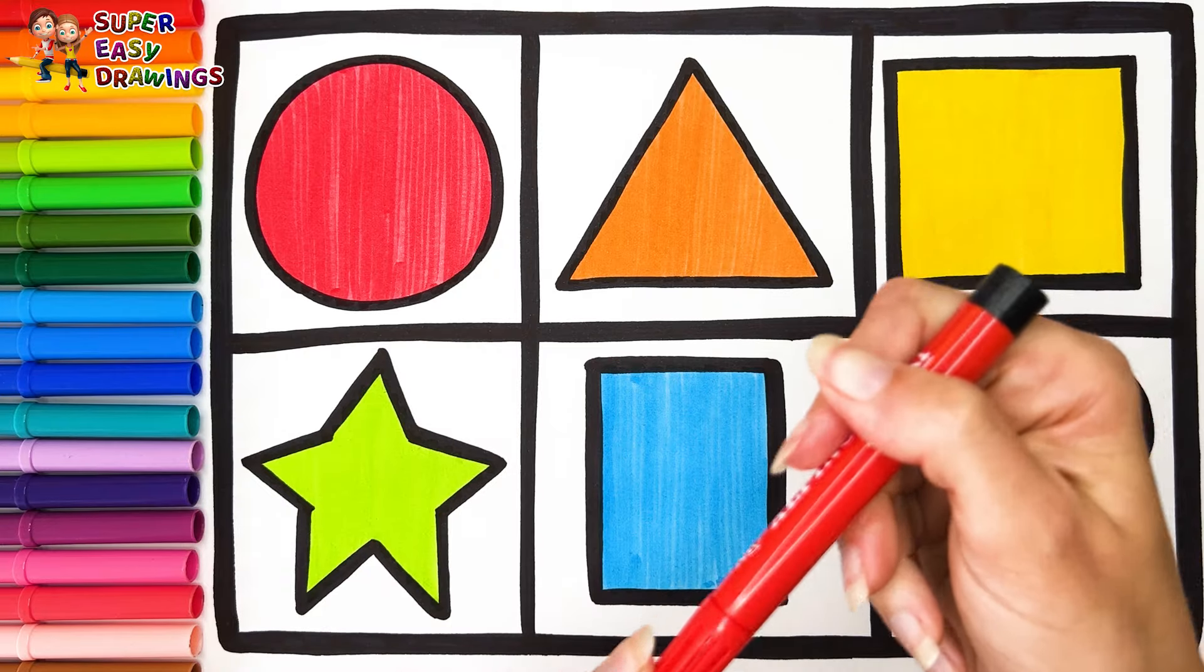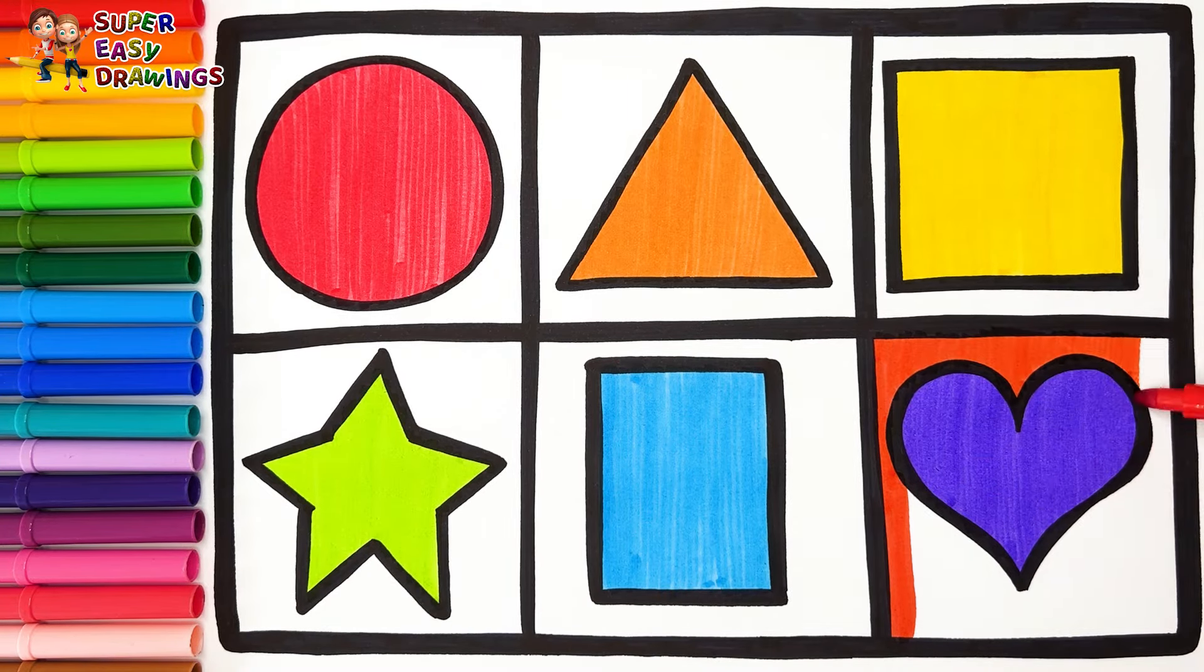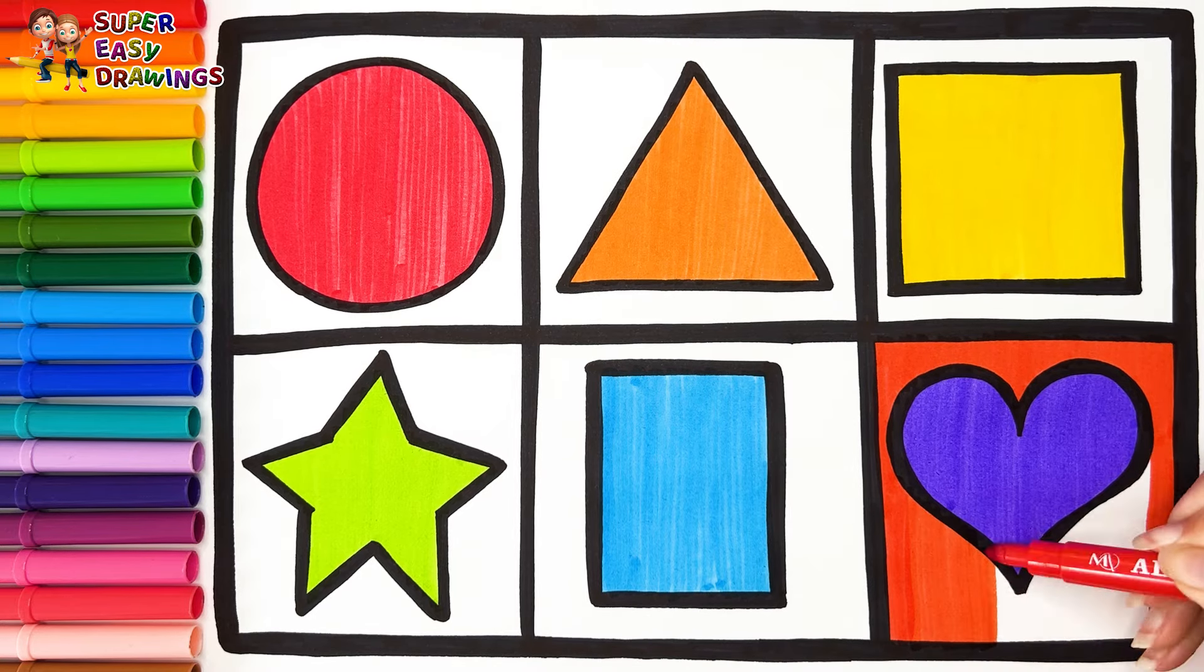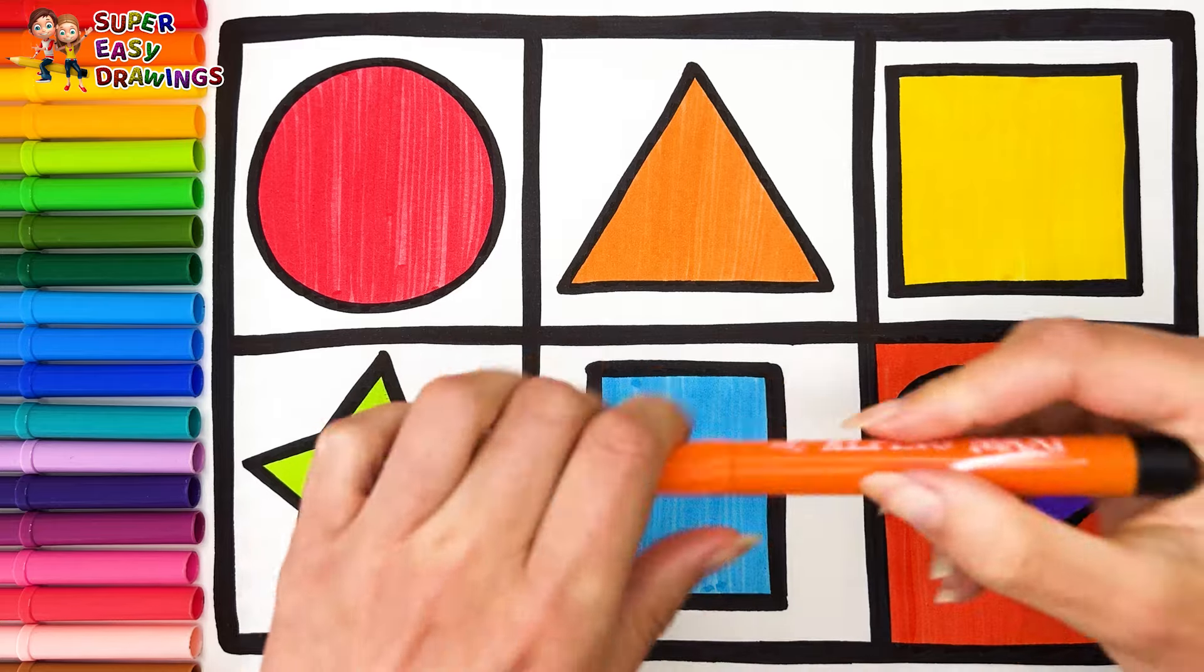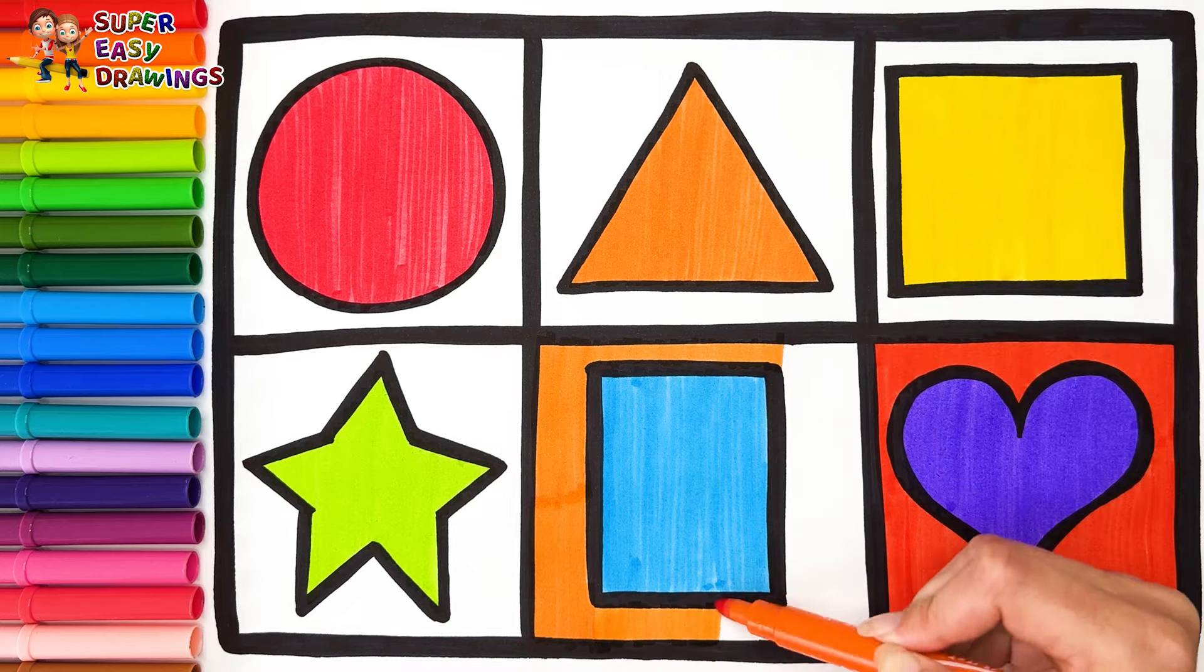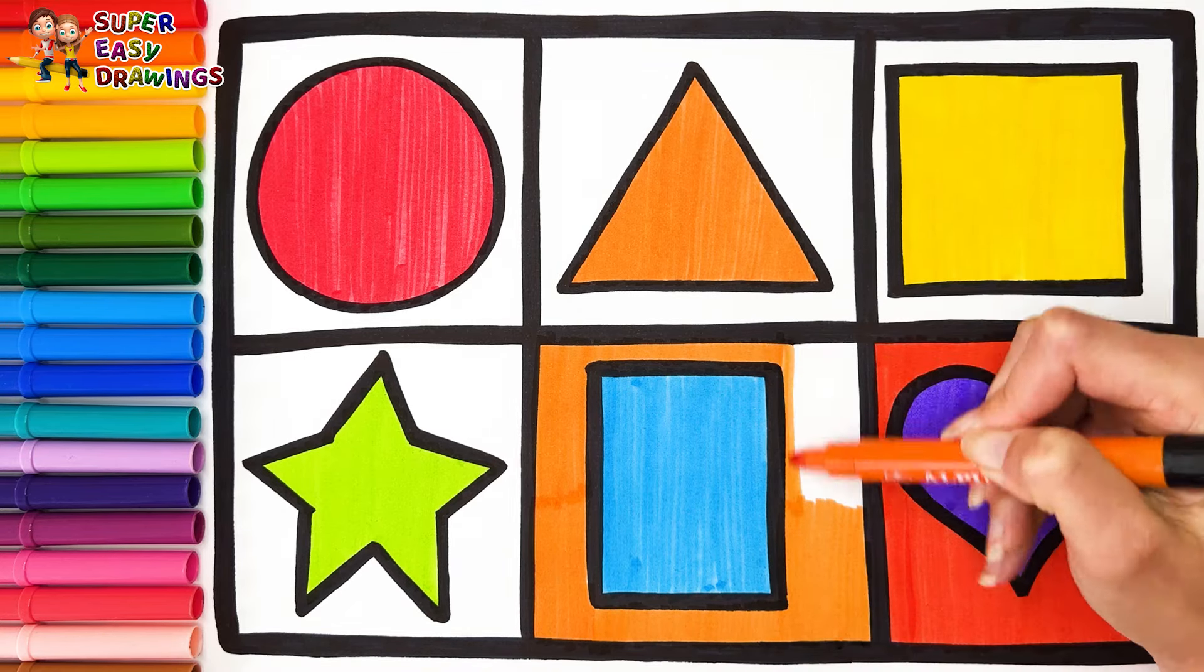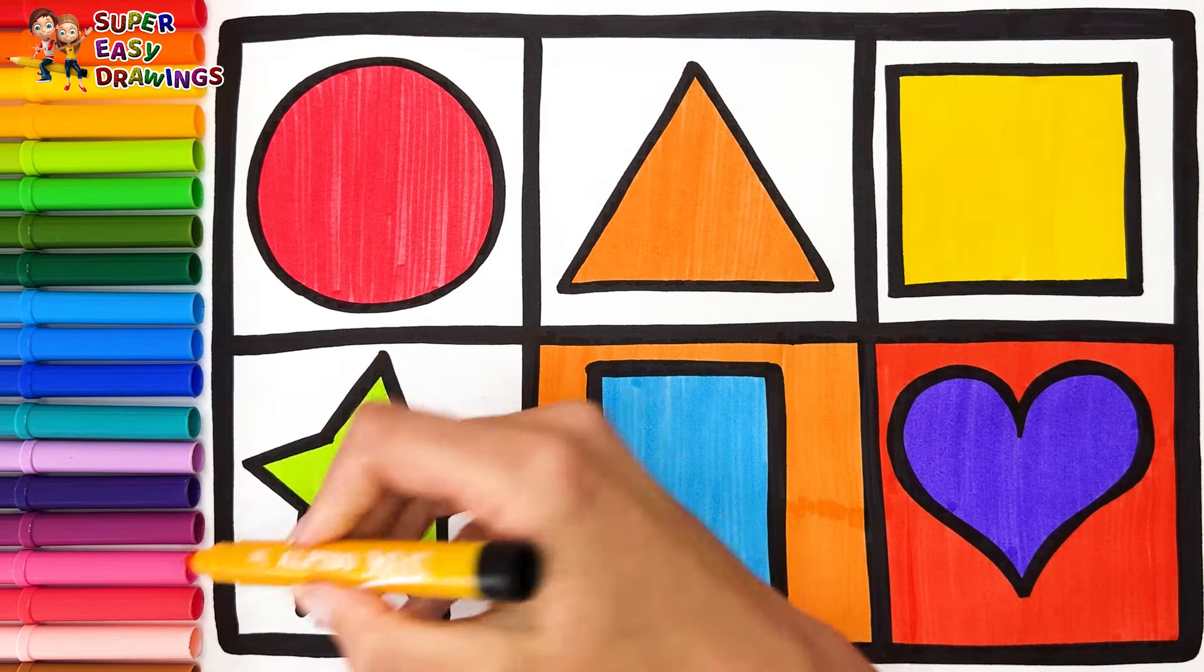Now let's color all the shapes with the colors of the rainbow. Red. Orange. Yellow.